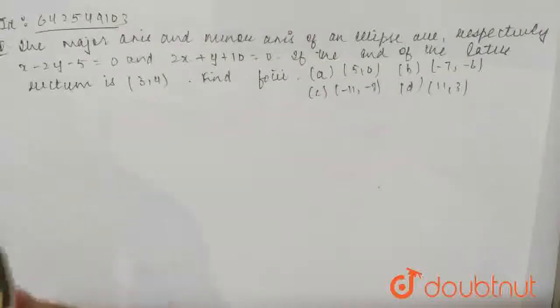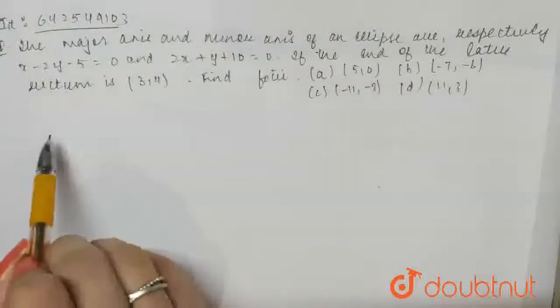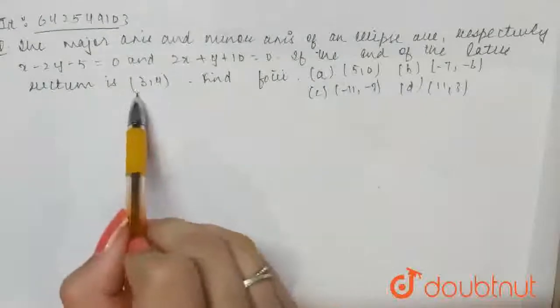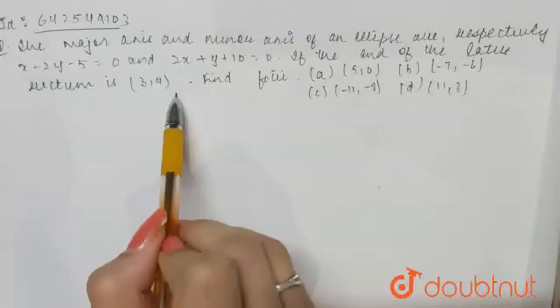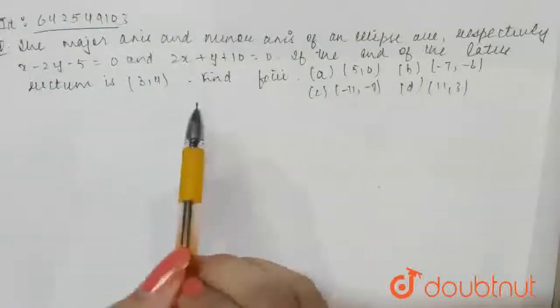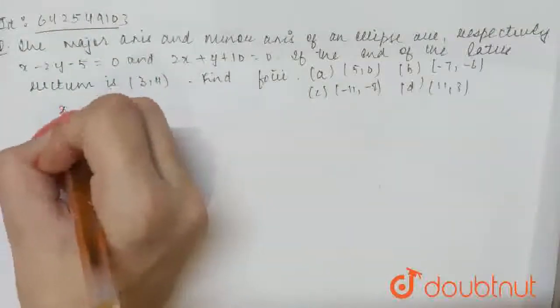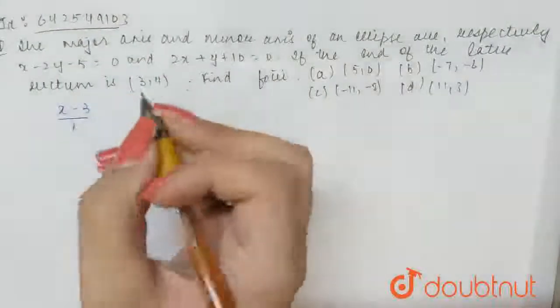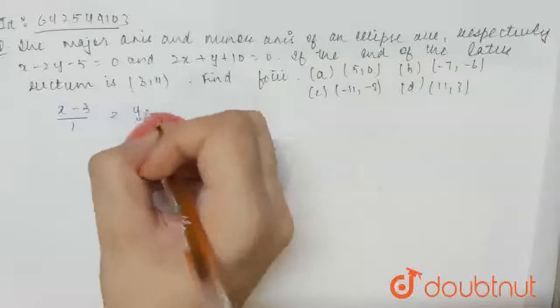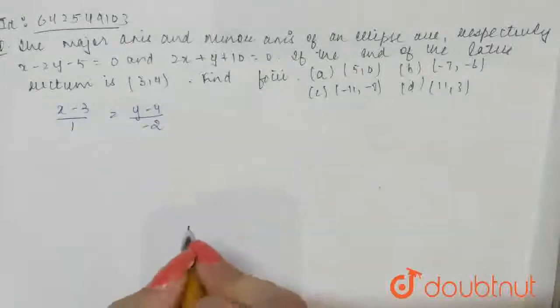So, first of all, foot of perpendicular from one end of latus rectum 3 by 4 on major axis, which is the focus, can be given as x minus 3 divided by 1 equals y minus 4 divided by minus 2, right?